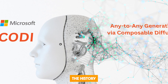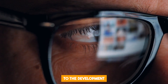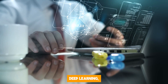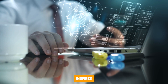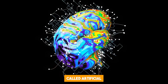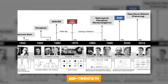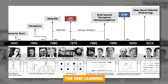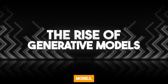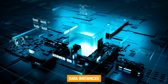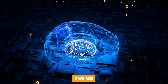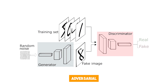The history of Composable Diffusion dates back to foundational technologies in artificial intelligence and machine learning. Deep learning, a subset of machine learning focused on algorithms inspired by artificial neural networks, emerged as a key concept in the mid-20th century. In the 1980s and 1990s, backpropagation was popularized, paving the way for deep learning to evolve. Generative models — capable of generating new data instances resembling training data — became a focus in the AI community in the early 2000s, giving rise to technologies such as Generative Adversarial Networks, or GANs, first introduced by Ian Goodfellow and colleagues in 2014.